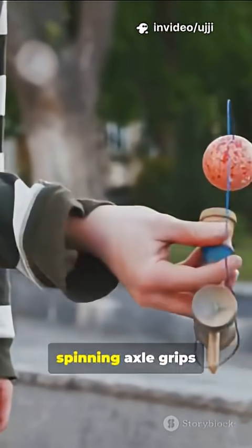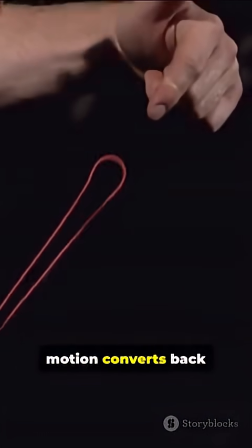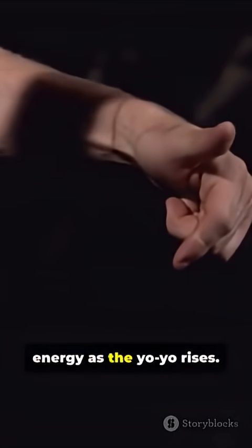When you tug the string, the yo-yo's spinning axle grips the string and climbs back up. The kinetic energy from the spin and motion converts back into potential energy as the yo-yo rises.